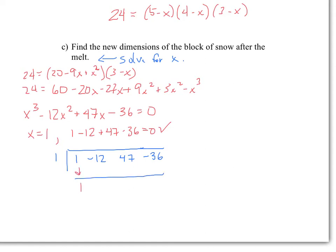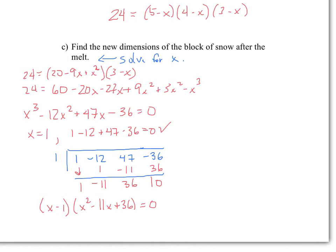Carrying out the synthetic division with 1: bring down 1, multiply to get 1, add to get −11, multiply to get −11, add to get 36, multiply to get 36, add to get 0. So I can rewrite as (X − 1) times (X squared − 11X + 36) = 0. Trying to factor X squared − 11X + 36: there are no two numbers that multiply to positive 36 and add to −11, so this quadratic cannot be factored further.